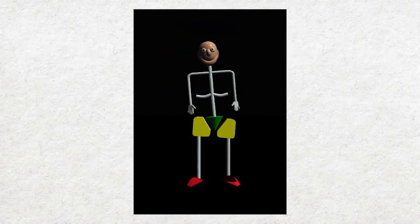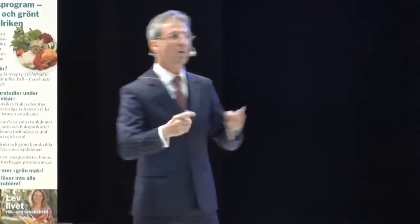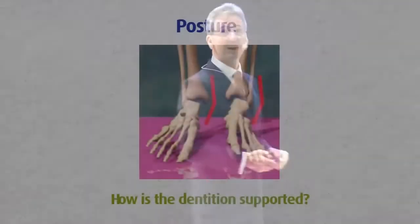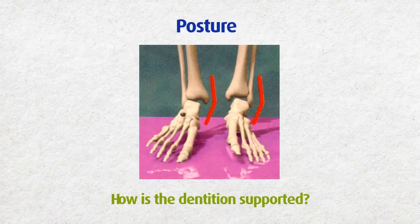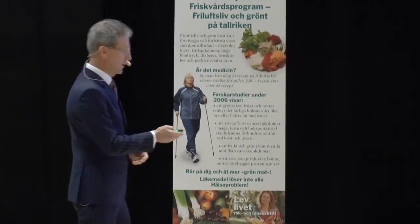One of the problems with posture is that it starts in the feet and goes to the head. So if you want to get straight teeth, we start by looking at the feet. I don't treat anybody's feet, but we look at them. What we say is: straight body, straight teeth; crooked body, crooked teeth.